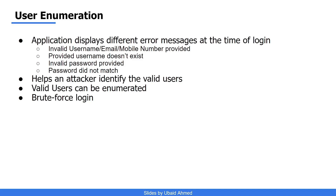An attacker can perform user enumeration to collect a list of valid users. They just have to provide a large number of possible usernames, emails, or mobile numbers, and based on the application response they can segregate valid users. Then they can pass a list of common passwords against those valid users, and if someone is using a common password, the attacker will gain access to their account.